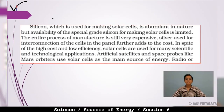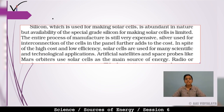Silicon, which is used for making solar cells, is abundant in nature, but the availability of the specific grade of silicon required for making solar cells is limited. The entire process of manufacture is still very expensive, and the silver used for interconnection of cells in the panel further adds to the cost.